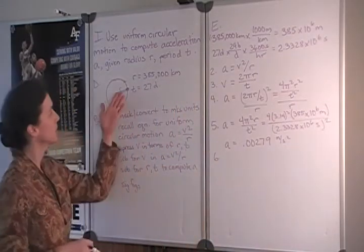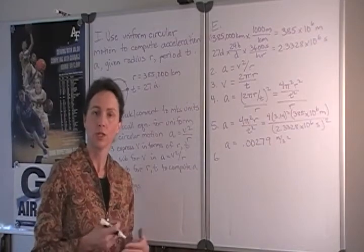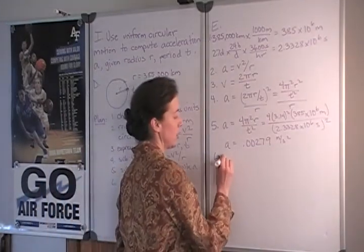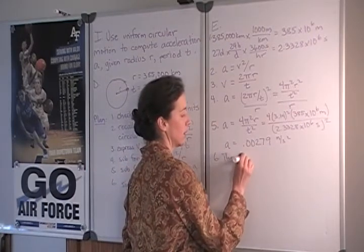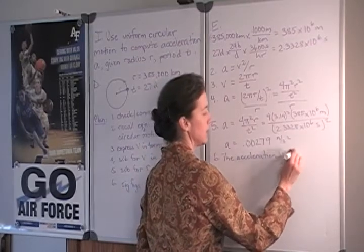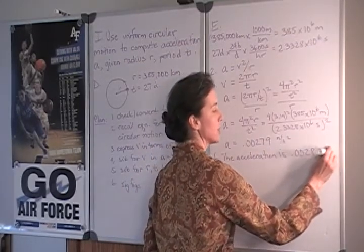Let's consider our given values. We see that the smallest number of significant digits is 2. So we should also round our answer to 2 sig figs. So the acceleration is 0.0028 meters per second squared.